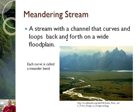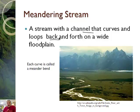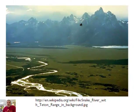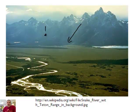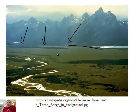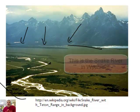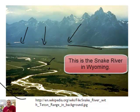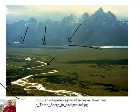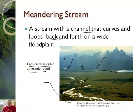That creates an interesting concept. Here's a word I want you to understand: a meandering stream. That's a stream with a channel that curves and loops back and forth on a wide floodplain. We have mountains here, and the water flows downhill, eventually creating this huge valley. All that water gets collected into the stream and it meanders. Each curve is called a meander bend. This is the Snake River in a very flat valley next to huge mountains.